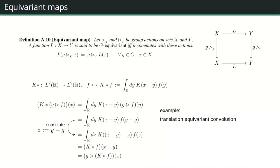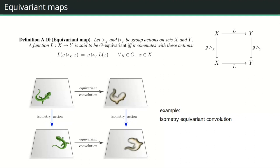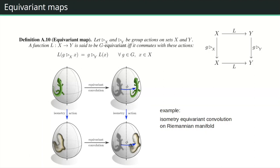My own research extends this beyond translation equivariance to convolutions commuting with other group actions such as rotations and reflections — isometry-equivariant convolutions. We generalize further to isometry-equivariant convolutions on manifolds, where the convolution on the manifold surface commutes with the isometry action of that manifold.